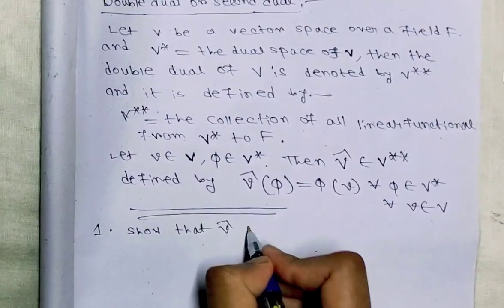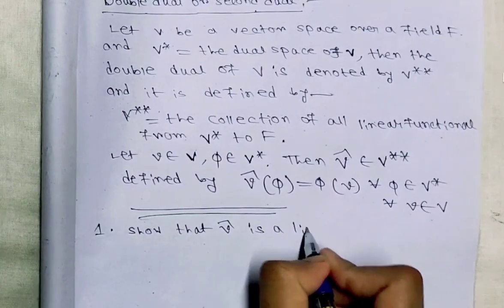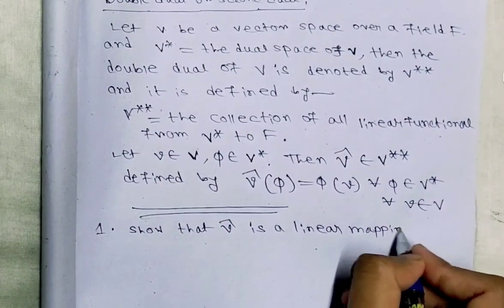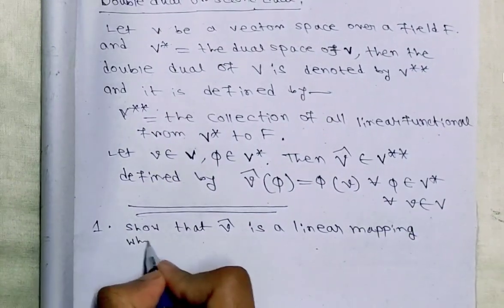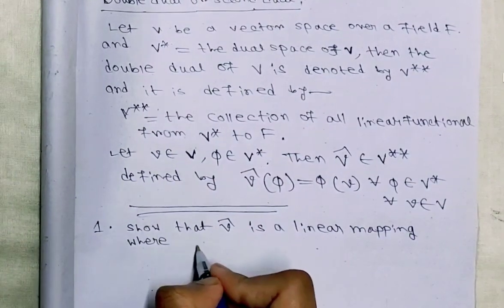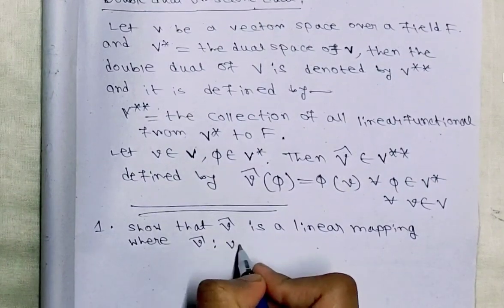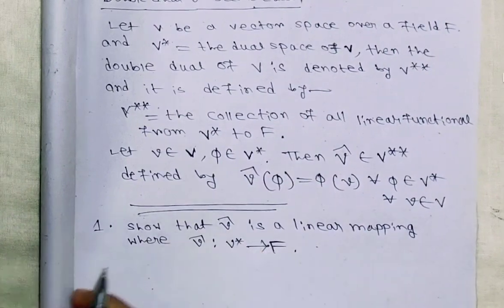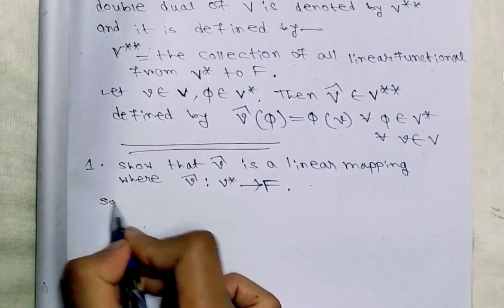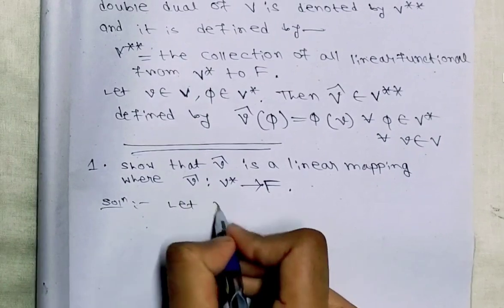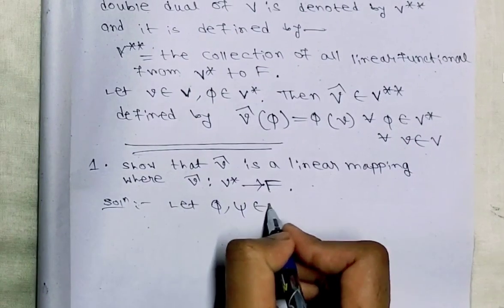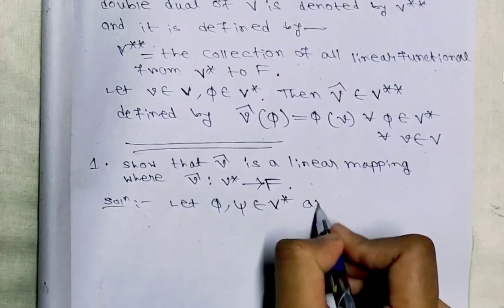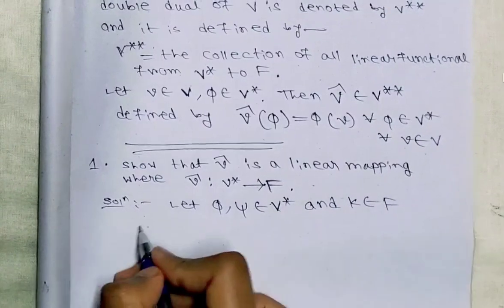So v̂ is a linear mapping, where v̂ is defined as a map from V* to F. To show this, let φ and ψ belong to the dual space V*, and let k belong to the field.